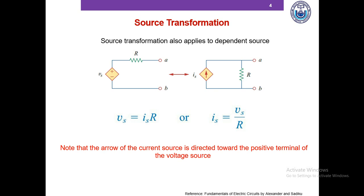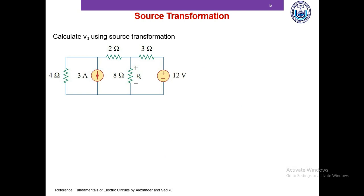An independent current source must be transformed into an independent voltage source and vice versa. Here is an example of source transformation. We will compute V0 in this circuit using source transformation. We start by converting this current source in parallel with this resistor into a voltage source in series with the resistor.